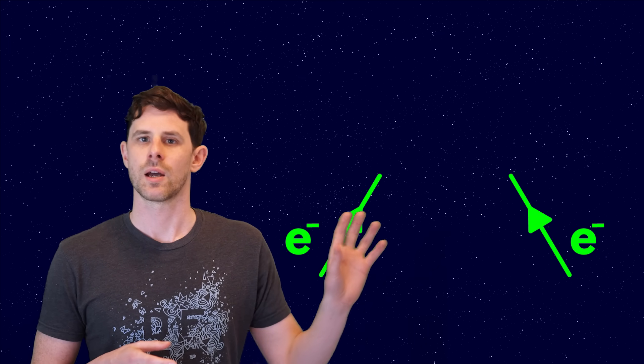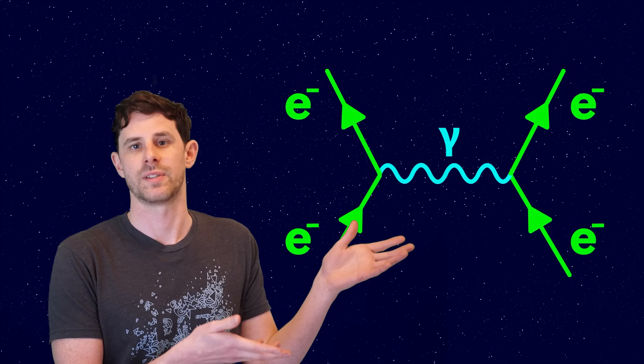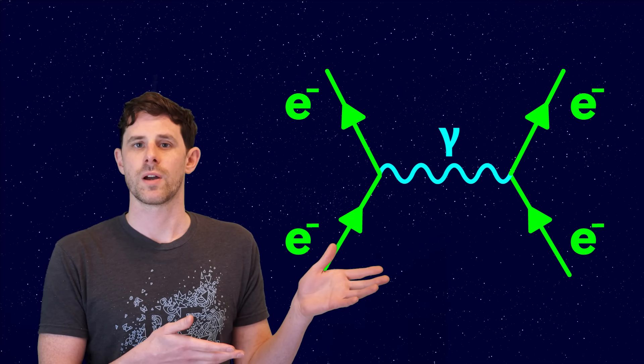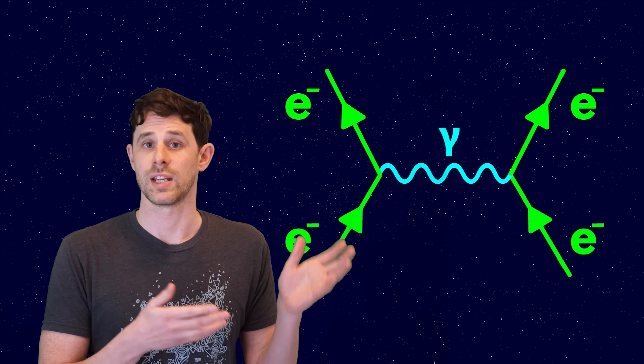A Feynman diagram is a picture of what happens when particles interact with each other. Particles go in one end, come out the other, and some stuff happens in the middle. And to make sense of Feynman diagrams you need to know three things.